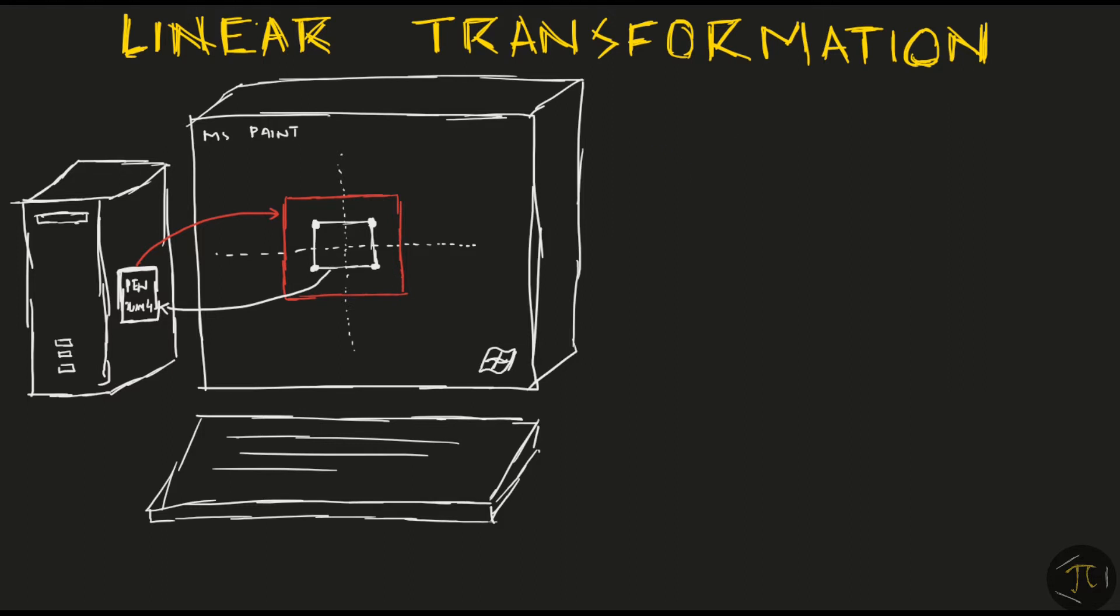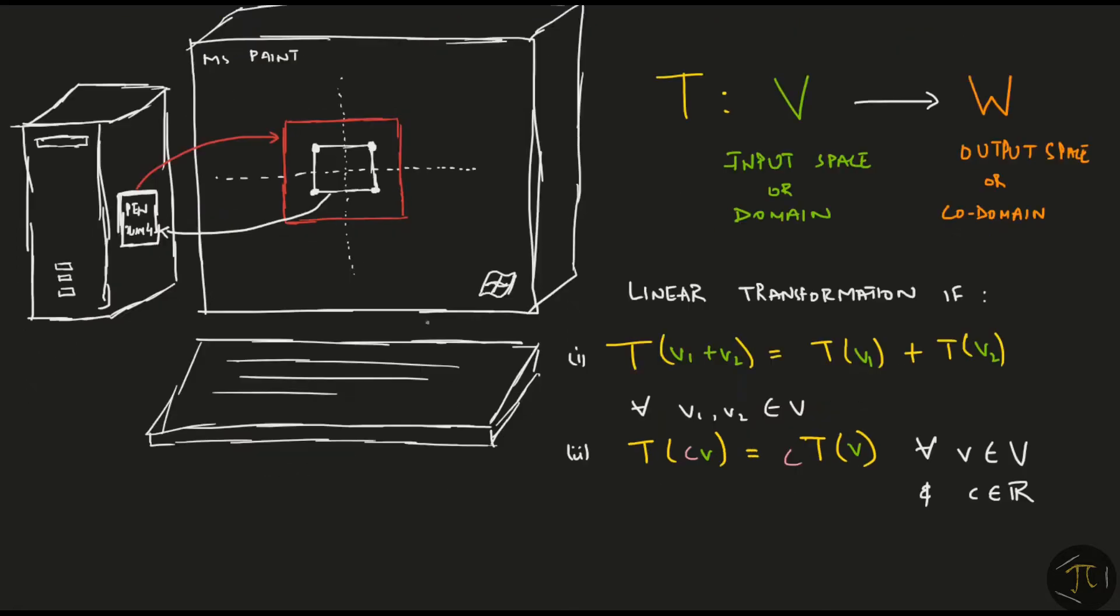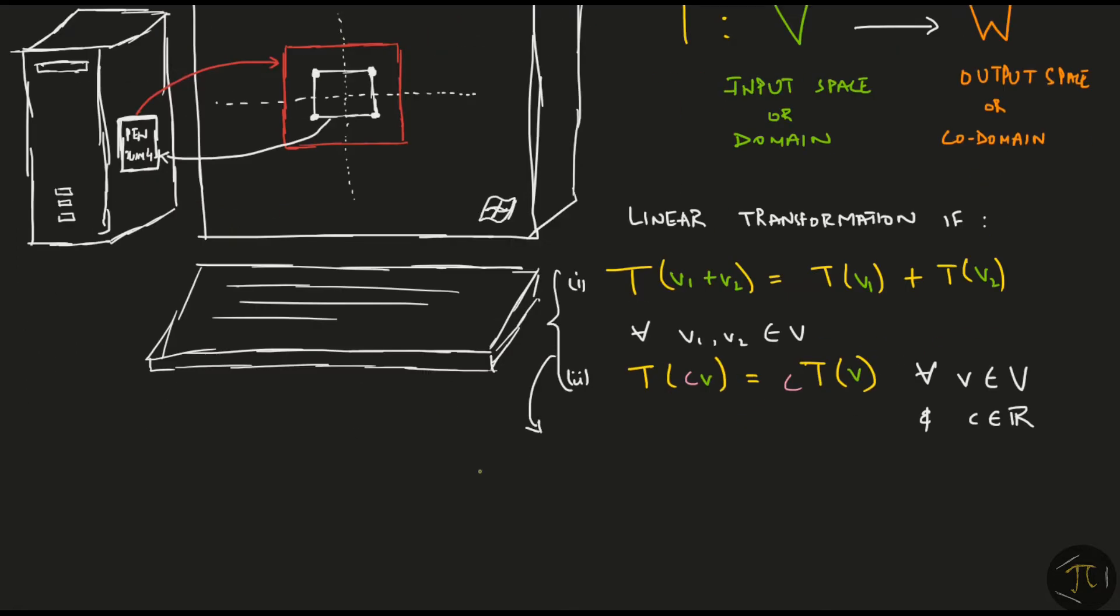A transformation is just a function from one vector space to another. Here, V is called the input space or the domain and W is the output space or the codomain. It is a linear transformation when it satisfies the following: The transformation of the sum of the vectors is equal to the sum of the transformations of the vectors, and the transformation of a scaled vector is the same as the scaled transformation of the vector. Combined together, these two properties say that the transformation of the linear combination of two vectors is equal to the linear combination of the individual transformations.